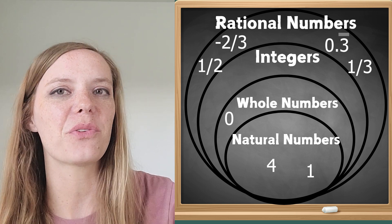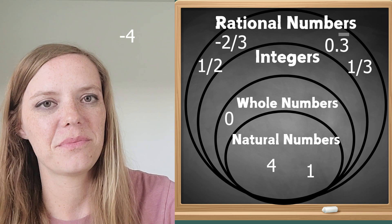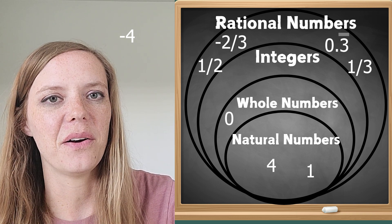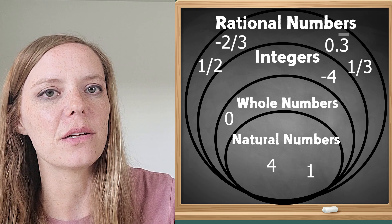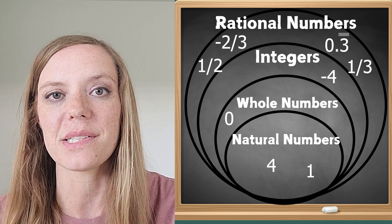Okay you got it. Rational numbers. And last negative four. Okay you got it. We're going to put that in integers because they are whole numbers and their opposites.